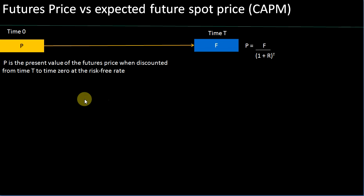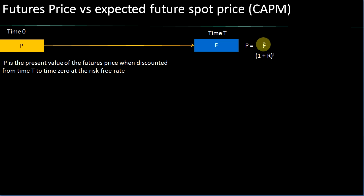Let's assume you have a particular portfolio and the portfolio's value today is P, and the futures price of that portfolio at time T is F. If R is the risk-free rate compounded on an annual basis, then if you discount your futures price F based on R, you will arrive at P. This is a simple formula: the futures price over time T, discounted at the risk-free interest rate R with annual compounding, gives you P. That's the formula here.